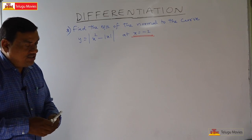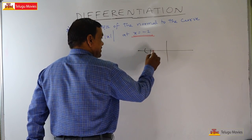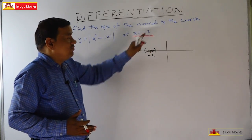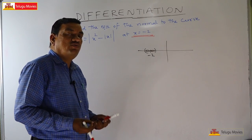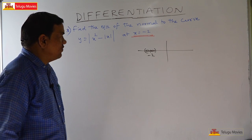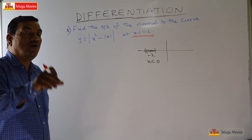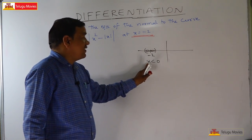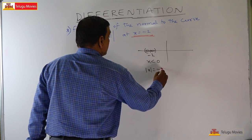At x = -2, we are working in the neighbourhood of -2. In that neighbourhood, x values are negative, so x < 0, therefore |x| = -x. This removes the inner modulus, giving us |x² - (-x)| = |x² + x|.